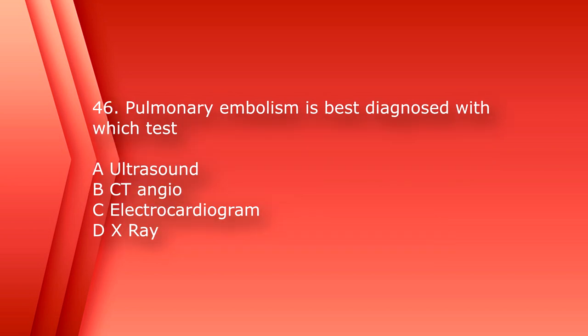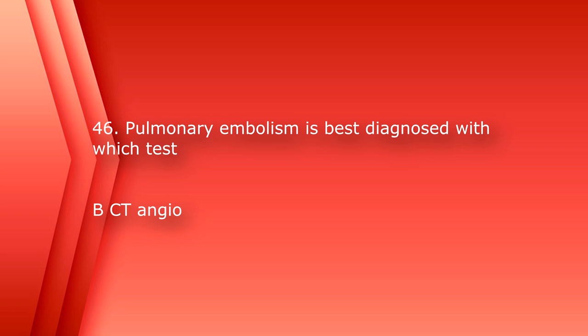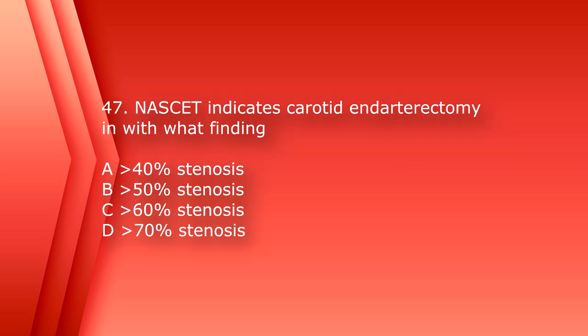Number 46: pulmonary embolism is best diagnosed with which test? A. Ultrasound, B. CT angio, C. Electrocardiogram, or D. X-ray. The answer is B, CT angio.